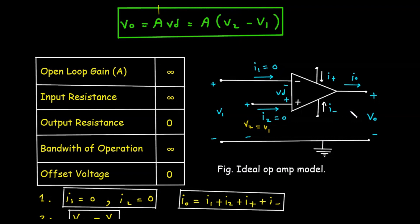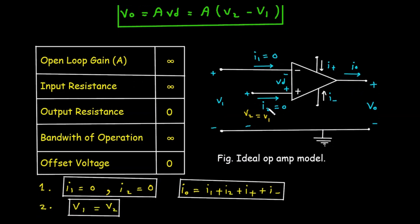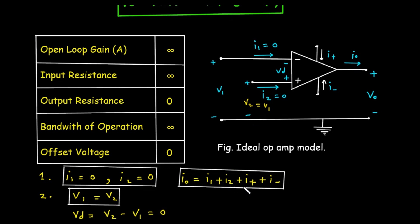Next, the diagram shows an equation for IO. This IO is the output current. Here we can see IO equals I1 plus I2 plus I+ plus I-. It's important to clarify: while the input currents are 0, the output current IO is not 0. The Op Amp's job is to supply current to the load. This current is provided by the Op Amp's power supply pins—here we can see these are the power pins—not from the input.